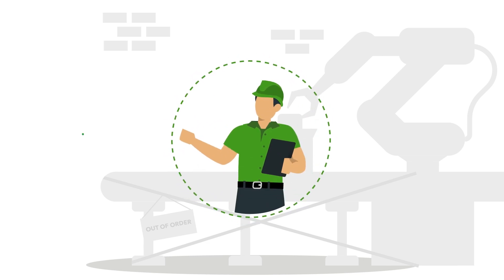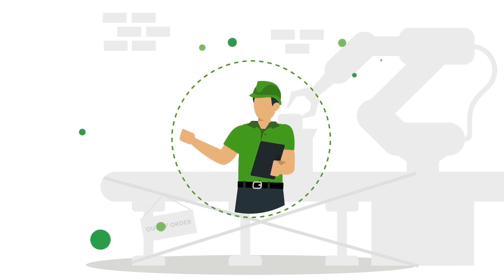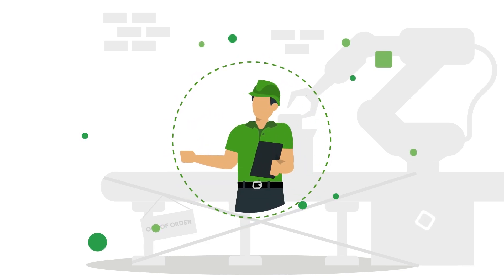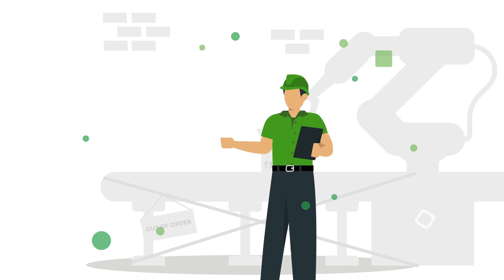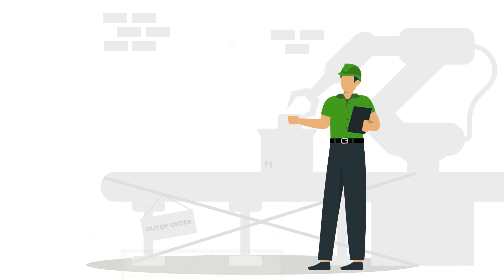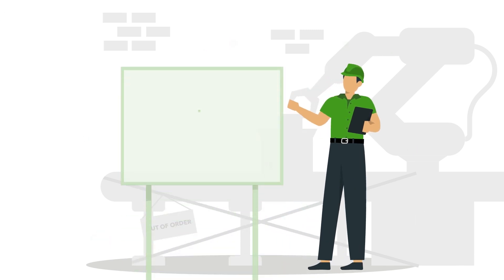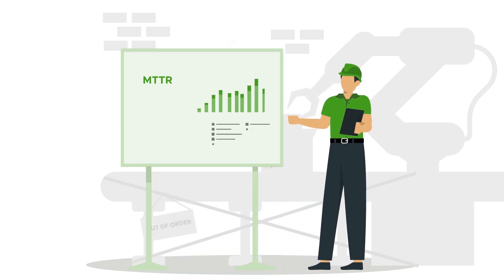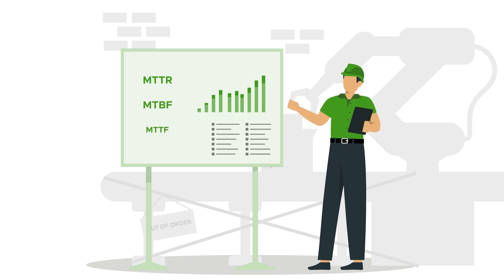There are three common failure metrics critical to effective maintenance management. These metrics are mean time to repair, mean time between failures, and mean time to failure.